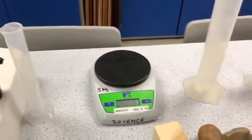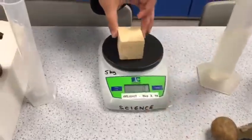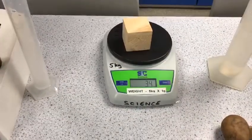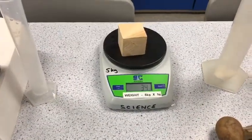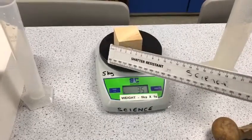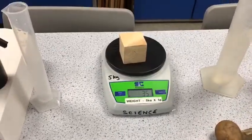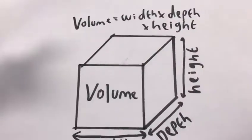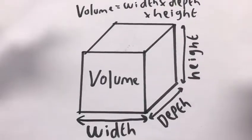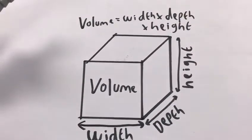For a regular shape, we measure the mass using the balance, and we measure the length, width, and height using a ruler. Once we have our width, depth, and height, we can multiply them together to get the volume.